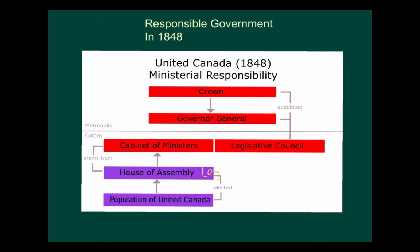This now meant that the Legislative Assembly could elect the members of the Executive Council — essentially the cabinet of ministers. The Executive Council introduced bills to the Legislative Assembly and approved bills that were passed there. In theory, they could still reject bills brought from the Legislative Assembly, but they approved them most of the time. The Legislative Council, which was still there, also approved laws for the majority of the time.